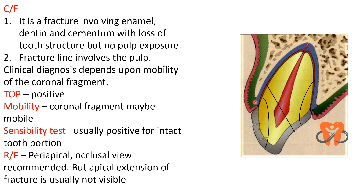Clinical diagnosis mostly depends upon the mobility of the coronal fragment. When the patient reports, you can see the crown portion is moving. If you percuss it, it is tender on percussion, giving a positive response, and mobility is of the fragment only. Sensibility tests are usually positive for the intact tooth portion. Radiographically, the periapical occlusal view is recommended, though the apical extension of the fracture is often not visible.